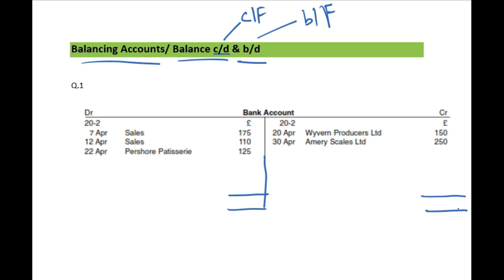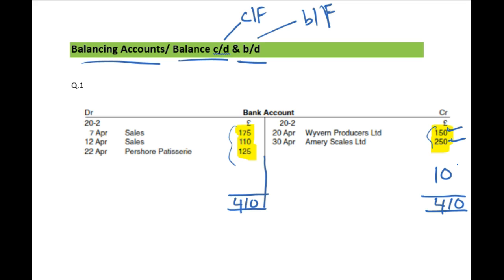You need to check which side is bigger. Add up these three entries and add up these two entries to see which side is bigger. If you add these three you get 410, and these two give you 400. So 410 is the bigger figure — you write that as the total on both sides. These two entries don't make 410, so 410 minus those two leaves a remaining 10 pounds. That is your balancing figure.